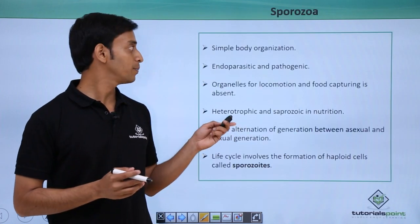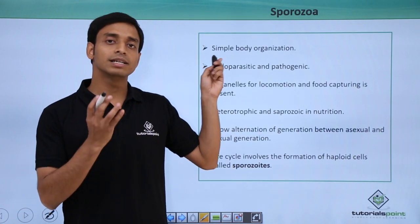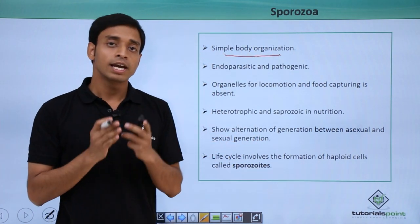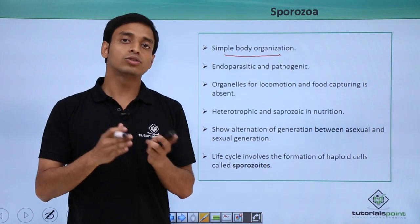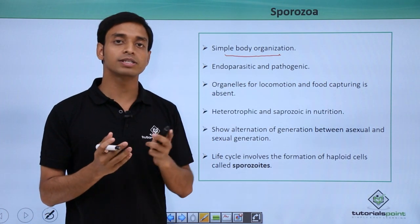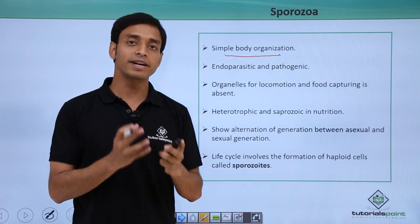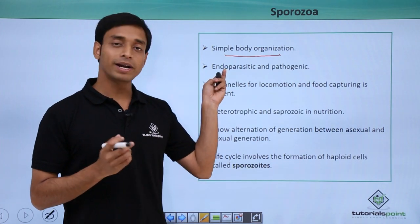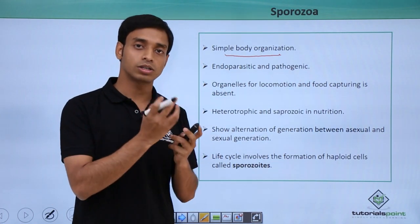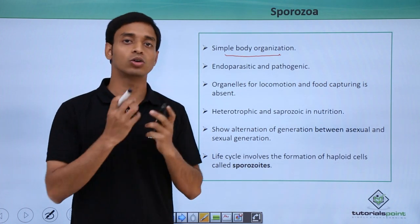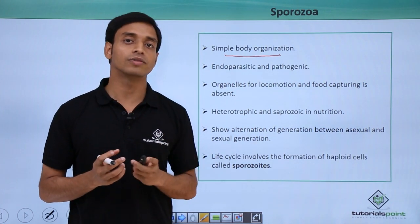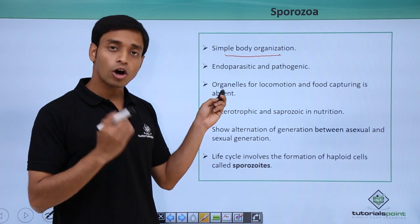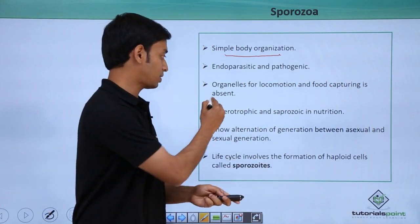Sporozoa is the simplest among all four types. They have a simple body organization. They are also endoparasitic, which means they parasitize on some host and are dependent on the host for their food, survival, and nutrition. Being endoparasites, they can stay inside the surface or inside the cells of the host organism, and they can also be pathogenic.